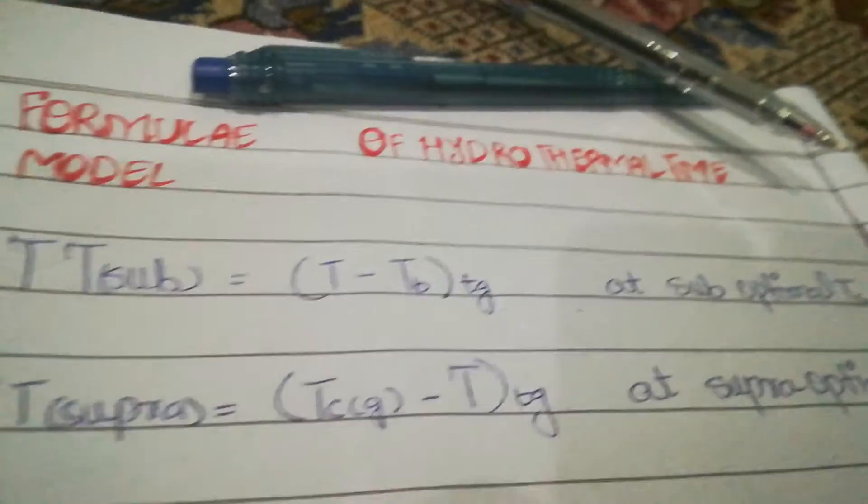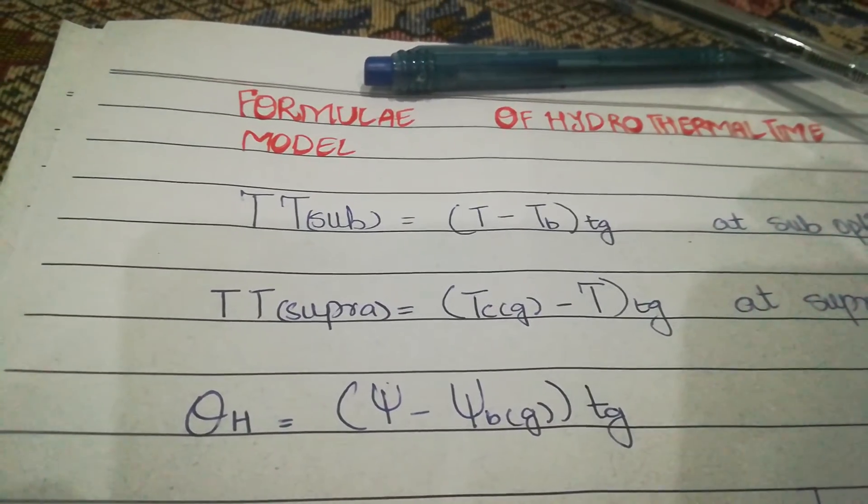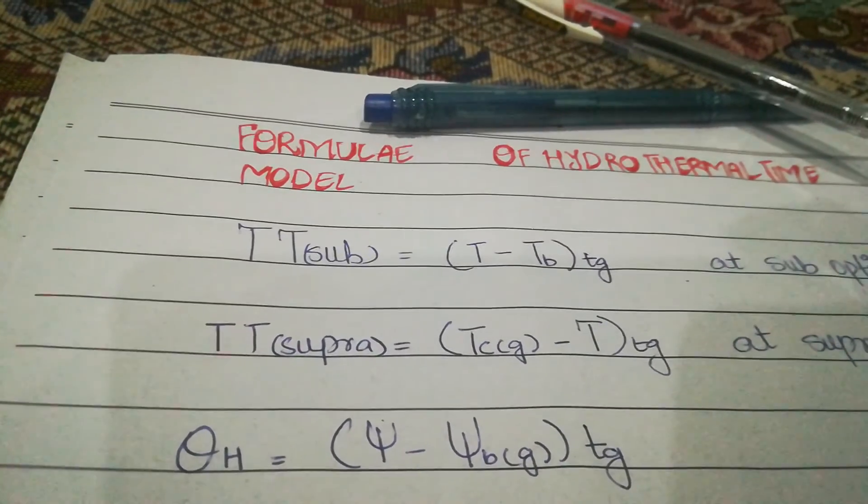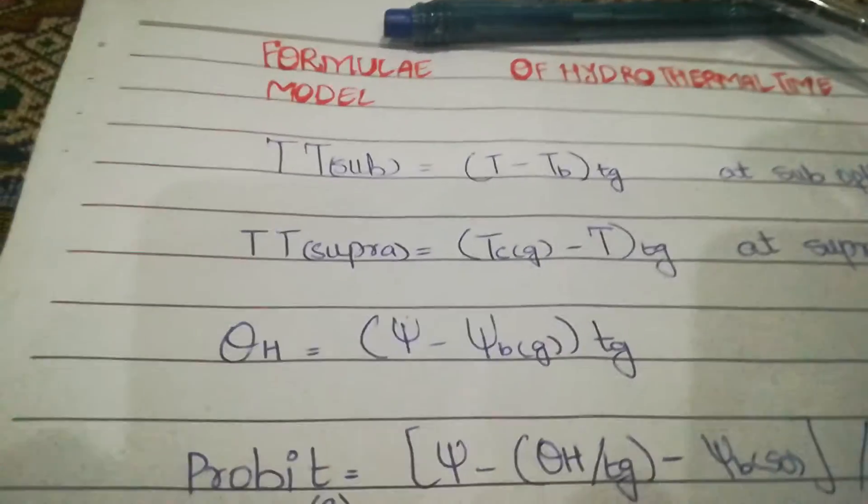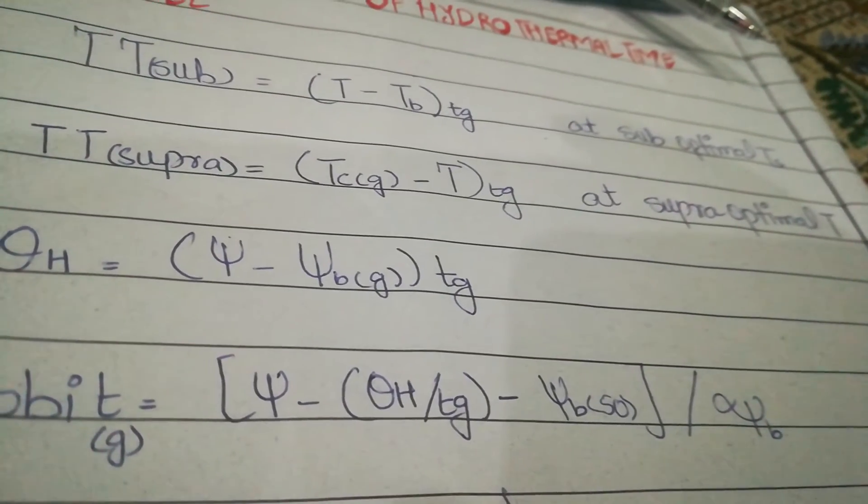at supra optimal temperature. The third formula will be the hydro time formula in which we will do Θ = (Ψ - Ψb(g))tg. The profit of this water potential will be water potential hydro time